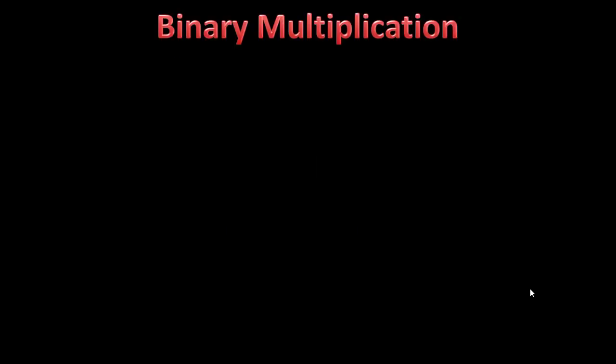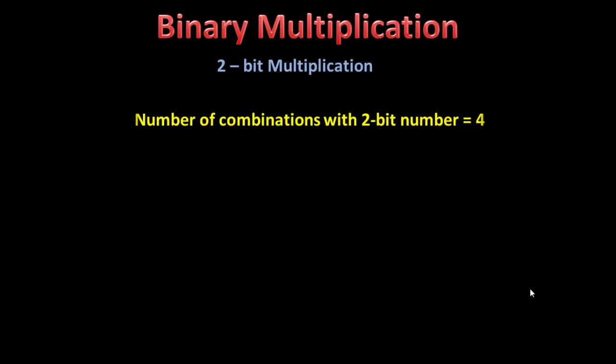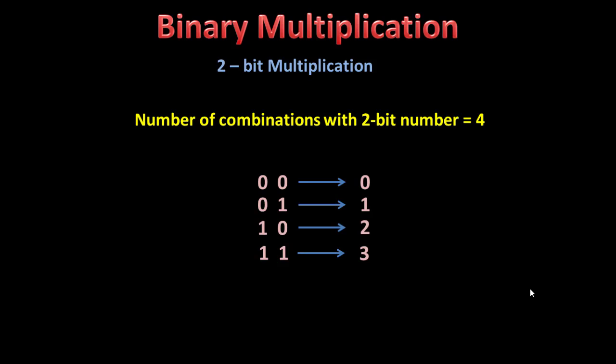First of all, let us see how the multiplication works in case of binary numbers. In 2-bit multiplication, we will have 2-bit numbers. With a 2-bit number, we can make four combinations: 00, 01, 10, and 11. These are the four combinations possible with a 2-bit binary number. Now 00 is 0 in decimal, 01 is 1, 10 is 2, and 11 is 3. To make this understanding simpler, I have converted these numbers so that when we multiply, we know what outcome we will be getting.